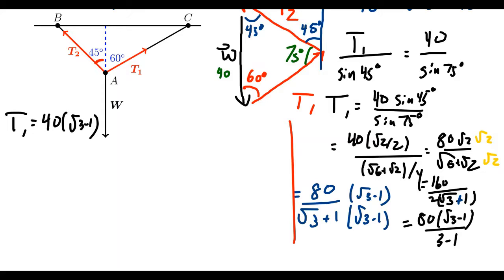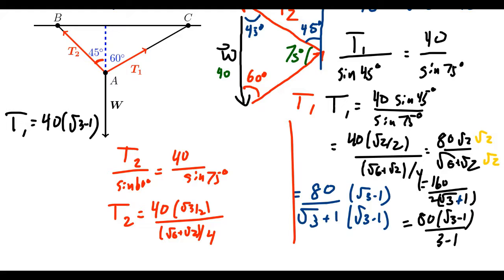To find T2, we do a similar calculation. T2 over sine of 60 degrees, this is equal to 40 over sine of 75 degrees. So in the end, this is going to be very similar. T2 is equal to 40 times sine of 60, which of course is 3 over 2. And then sine of 75 degrees is square root of 6 plus square root of 2 over 4. This gives us 80 times the square root of 3 over the square root of 6 plus the square root of 2.